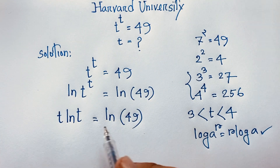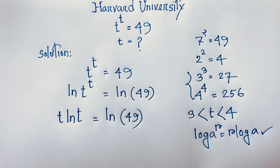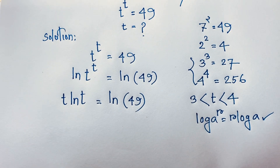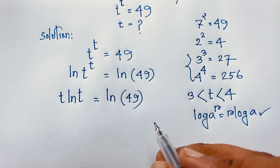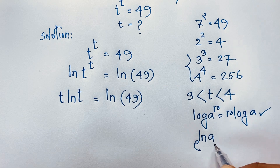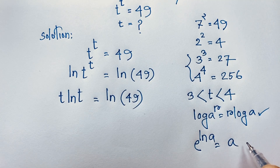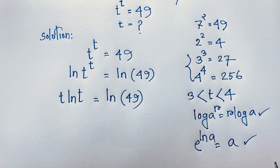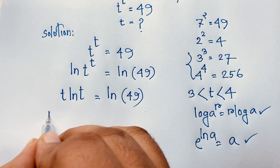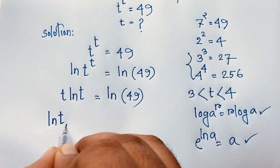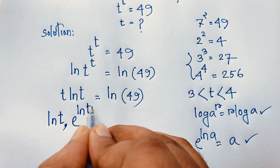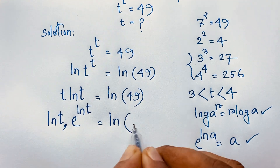Now, t is equal to what? How to simplify this expression? We know that e to the power ln(a) equals a. So this t can be written as e to the power ln(t). Substituting, we get: e to the power ln(t), times ln(t), equals ln 49.